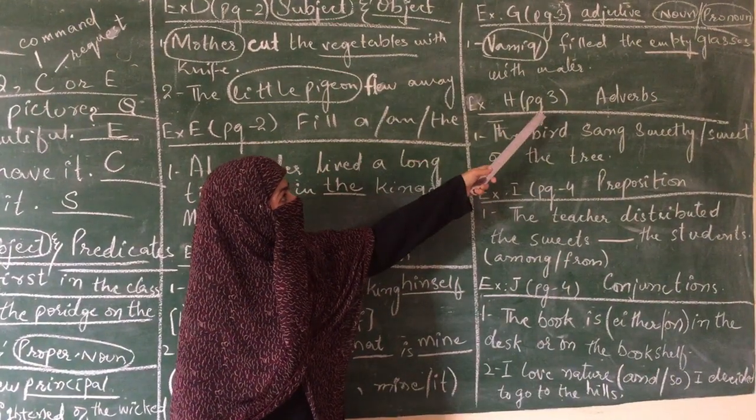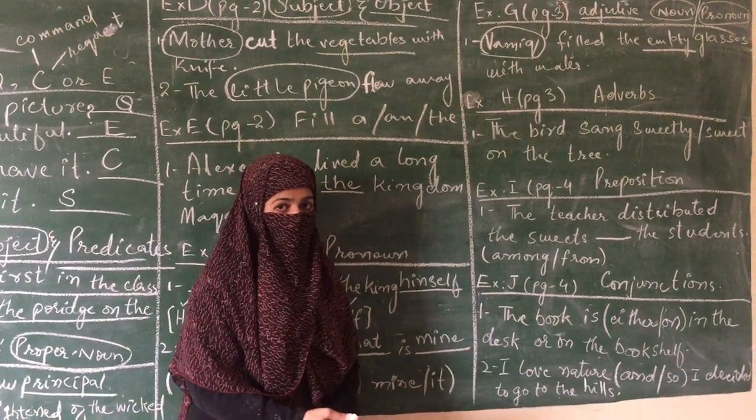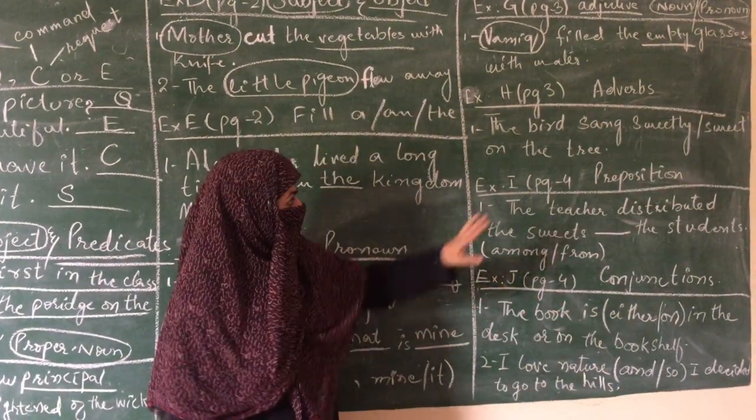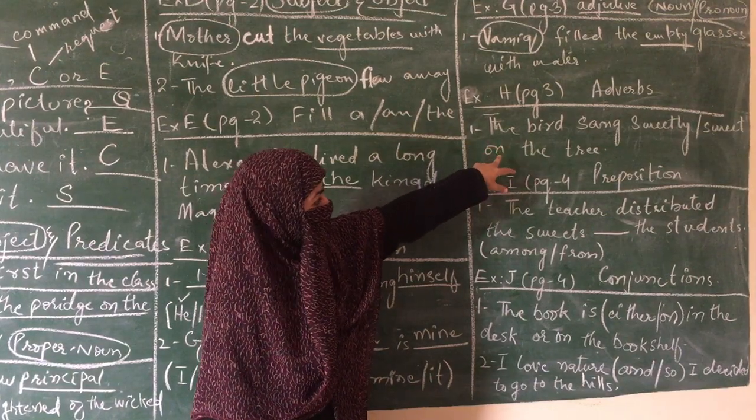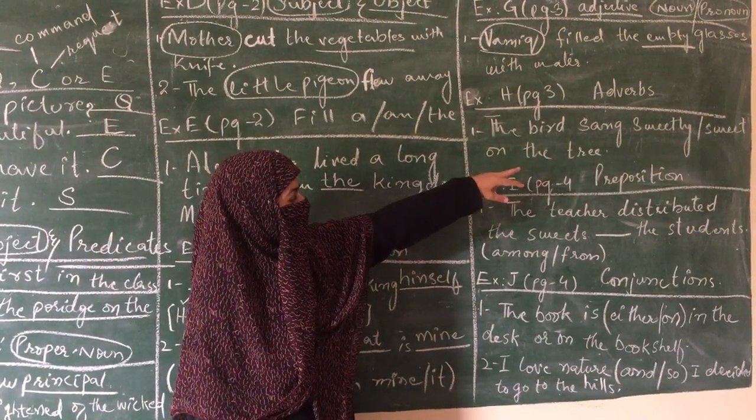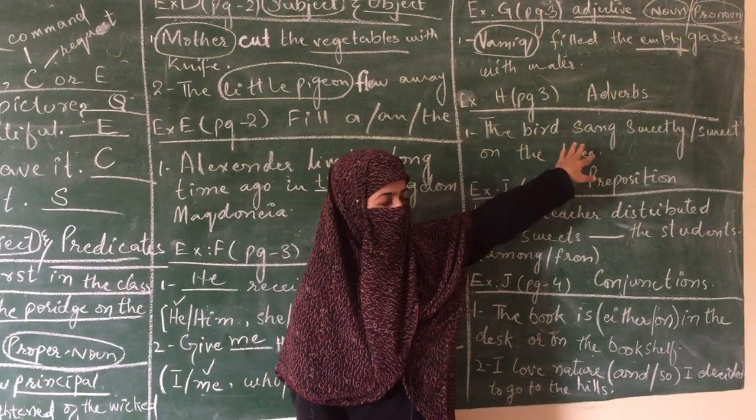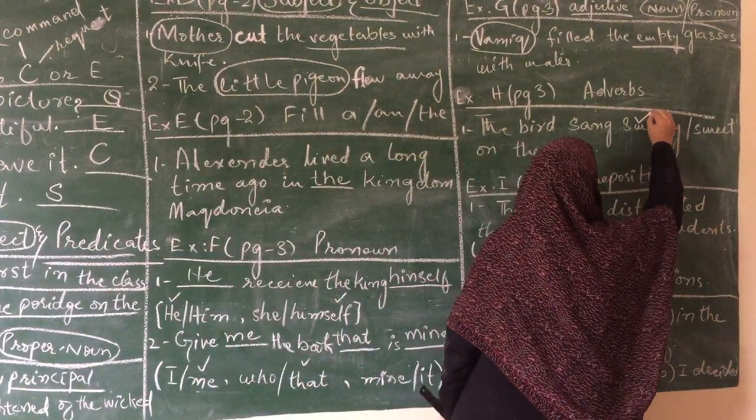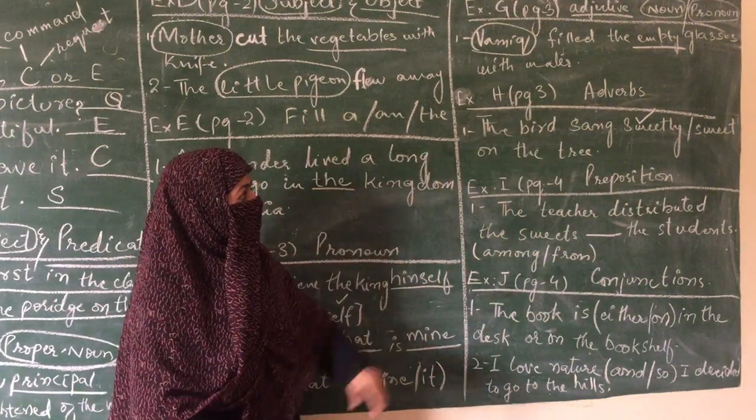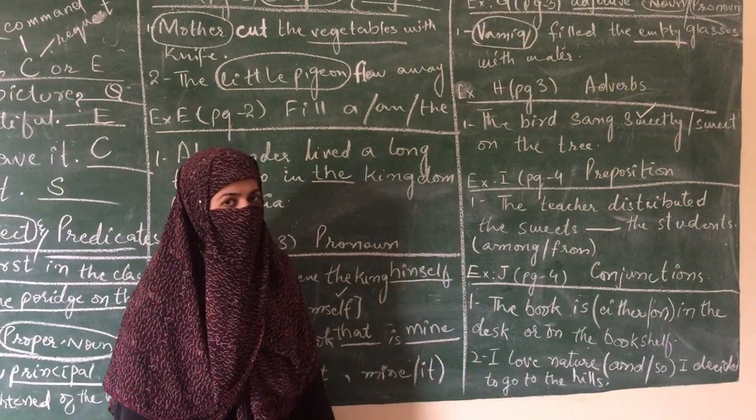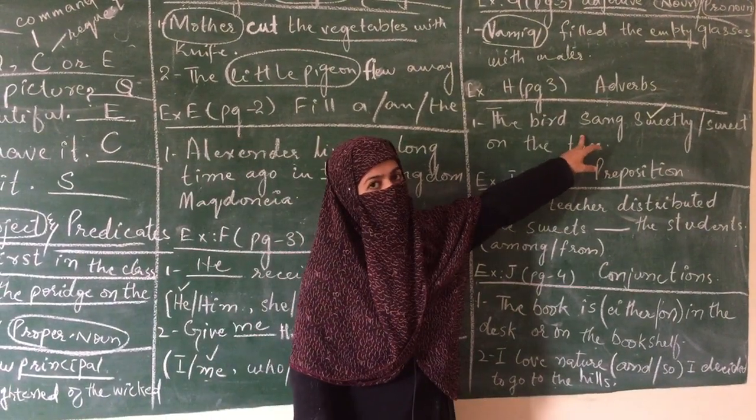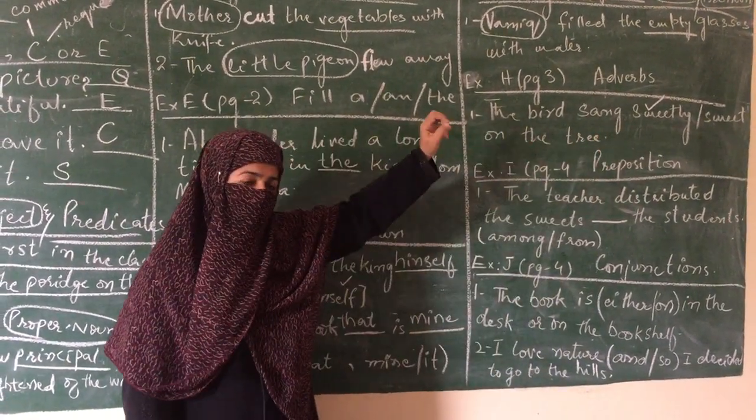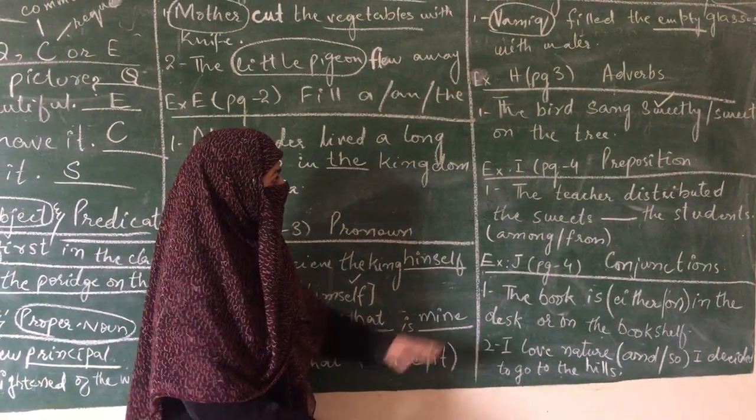Exercise H on page number 3: Adverbs. What are adverbs? Adverbs are the words which tell about your verb. Now look in this example: The bird sang sweetly on the tree. What is our noun? Bird, which is singing. How is the bird singing? Sweetly. That's why we mark the word sweetly here. The word sweetly is our adverb. Actually in this exercise you have to select the correct adverb for your verb. The bird sang, what action? Sang, singing. In what manner? Sweetly, beautifully. So we mark sweetly.